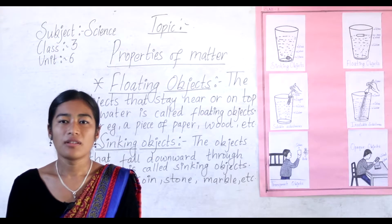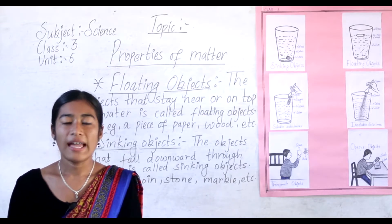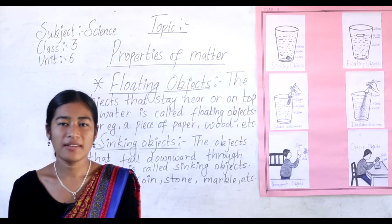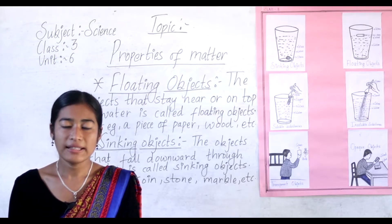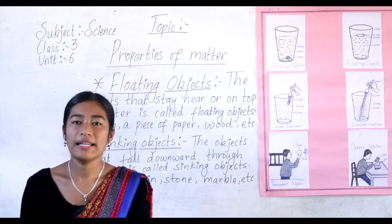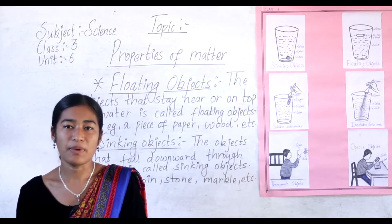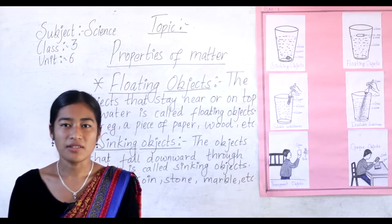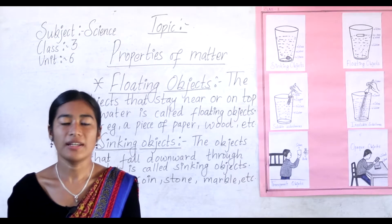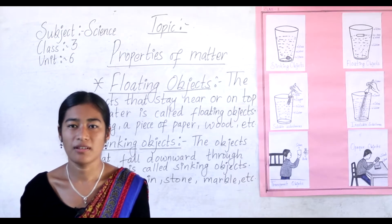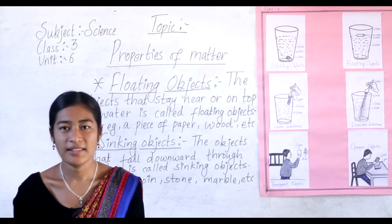First, let's discuss about matter. Anything that has weight and occupies space is called matter. We see different materials around us — they have different shapes and sizes.